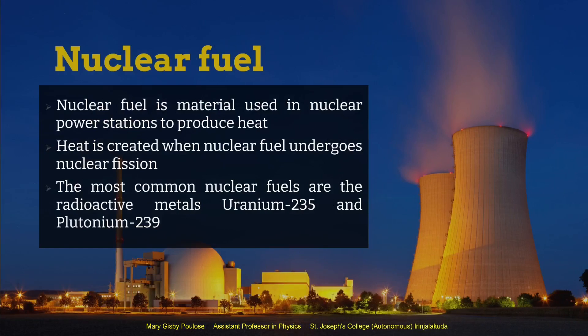The next type of conventional energy source is nuclear fuels. Nuclear fuel is the nuclear material used in nuclear power plants where heat is produced. Within the power plants we have nuclear fission reactions where a tremendous amount of heat is generated, and this heat can be used to produce electricity. The most common types of nuclear fuels are the radioactive elements uranium-235 and plutonium-239.